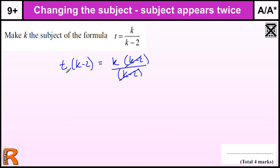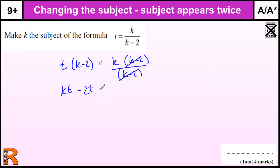Now I need to get the Ks together so that I can factorise them out. When you've got it in two places, you're going to have to do some factorising at some point. So multiplying out this bracket, we get K times T — I'm going to write it so that K comes first in the alphabet — and then take away T times 2, which is 2T. And that's equal to K.